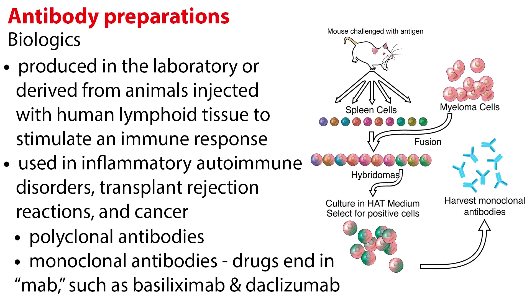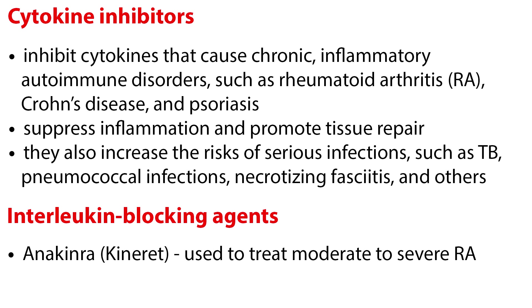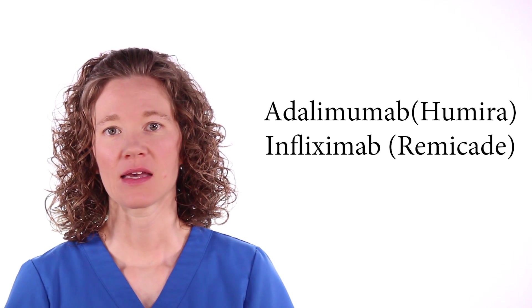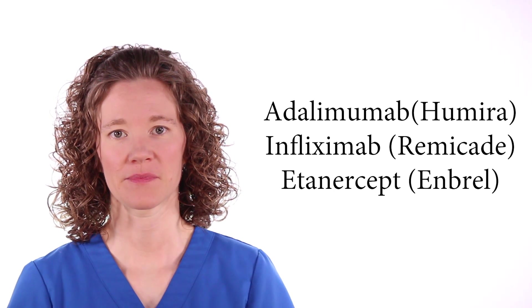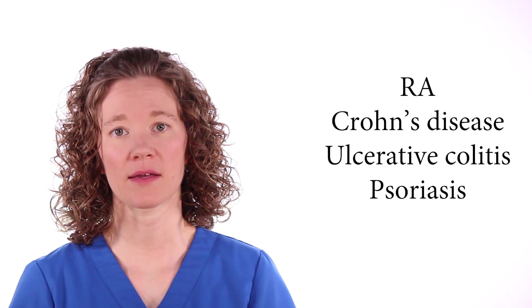Monoclonal antibody drugs end in -mab, such as basiliximab and daclizumab. Cytokine inhibitors are biologic agents that inhibit cytokines that cause chronic inflammatory autoimmune disorders, such as rheumatoid arthritis, Crohn's disease, and psoriasis. They suppress the inflammation and promote tissue repair. However, they also increase the risks of serious infections, such as TB, pneumococcal infections, and necrotizing fasciitis. An example of an interleukin blocking agent is anakinra, used to treat moderate to severe RA. Some examples of TNF-alpha blocking agents include adalimumab, infliximab, and etanercept. These drugs are used to treat autoimmune diseases such as RA, Crohn's disease, ulcerative colitis, psoriasis, and psoriatic arthritis.